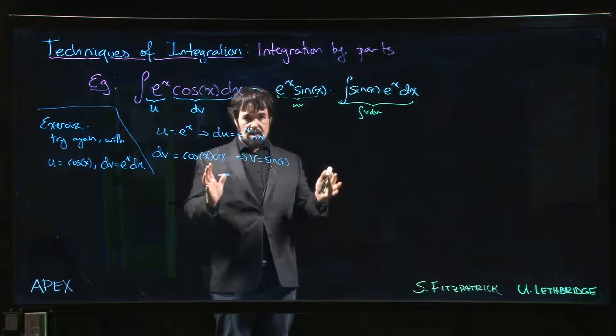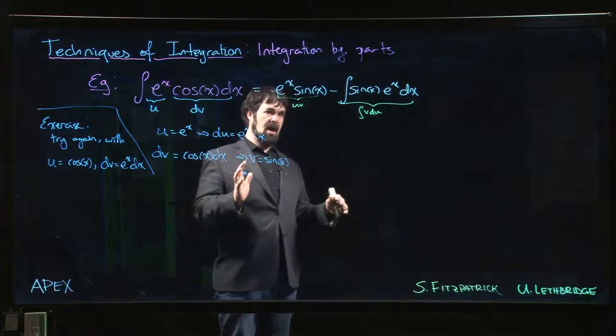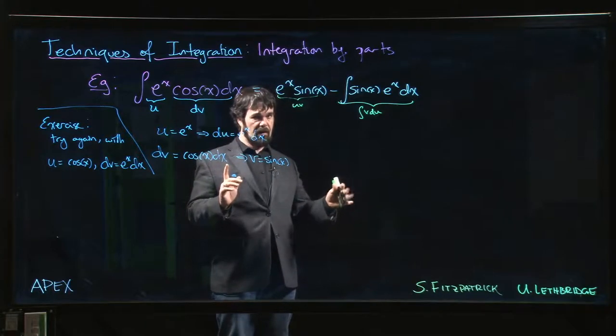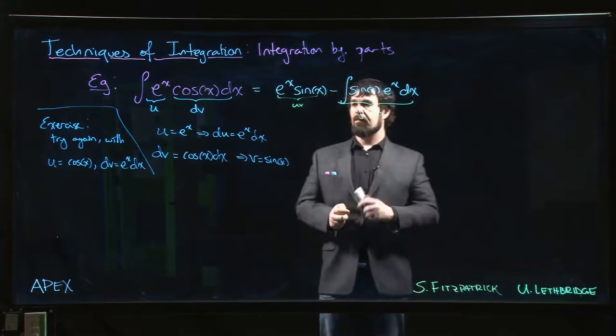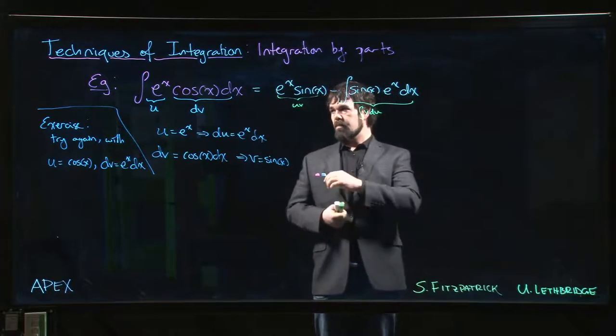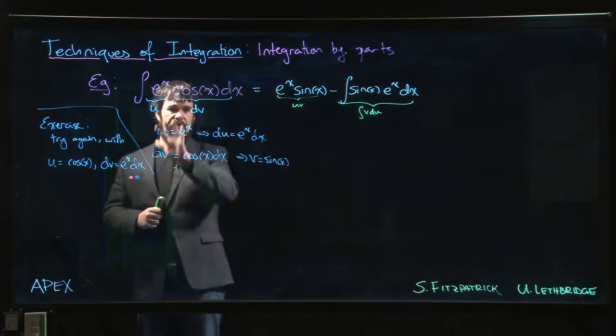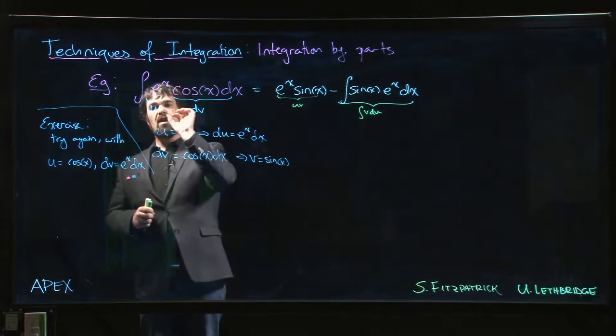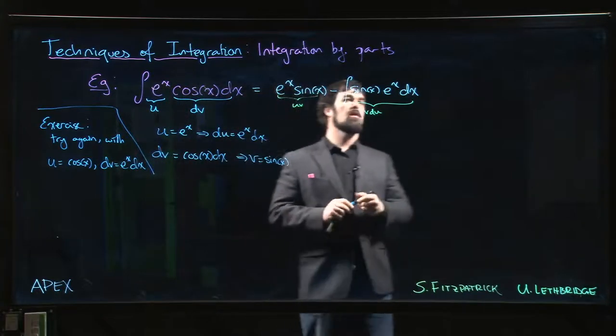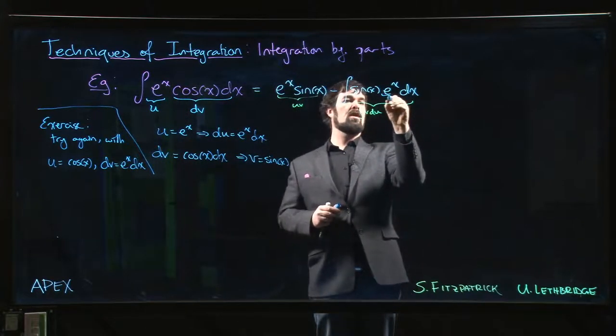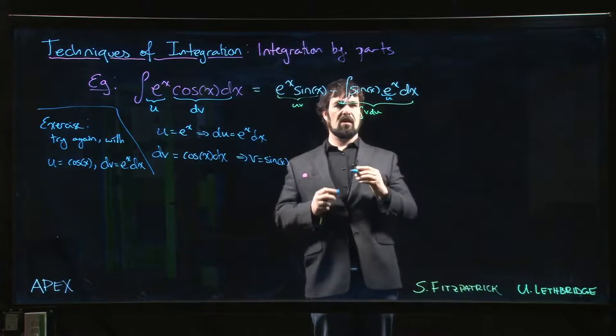So what you do is you do integration by parts again. And it might feel like you're going to go around in circles, but bear with me and we'll see that this actually works out. The important thing here is you have to be consistent in your choice of u and dv. So if you chose u to be the exponential function last time, you need it to be the exponential function again this time, okay?